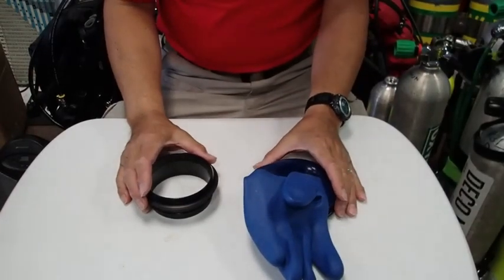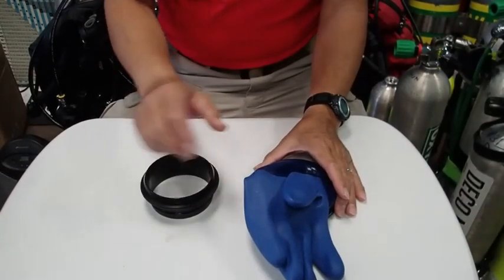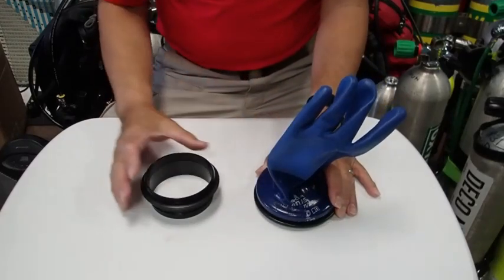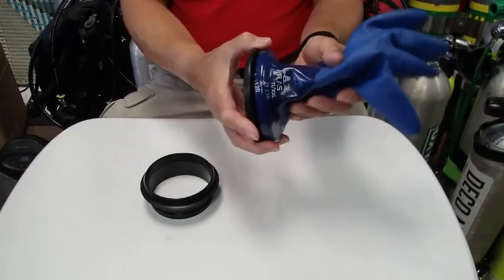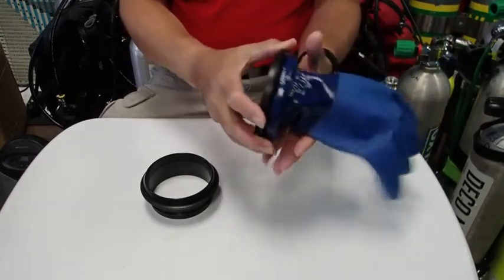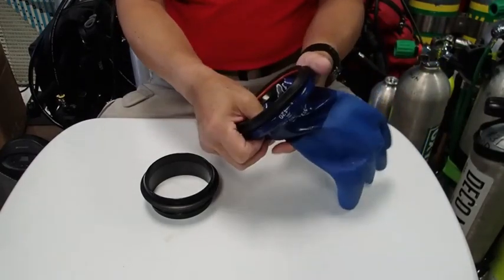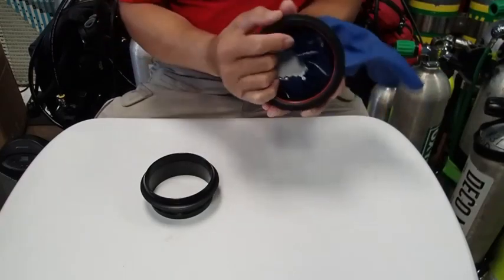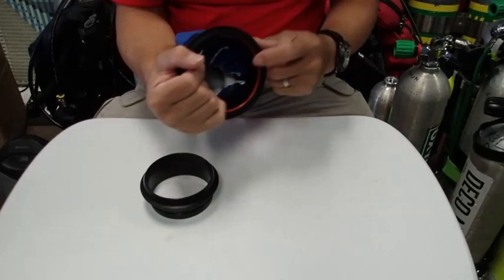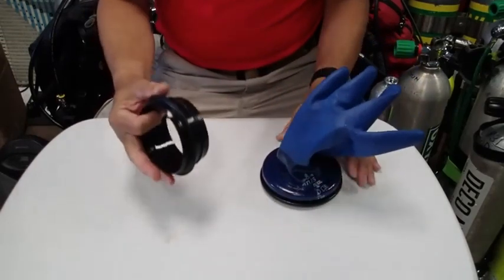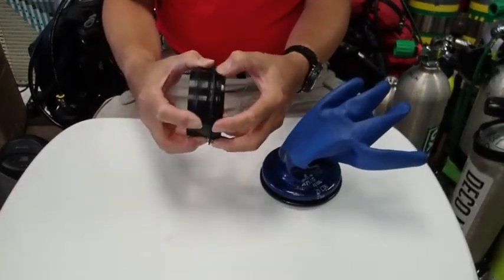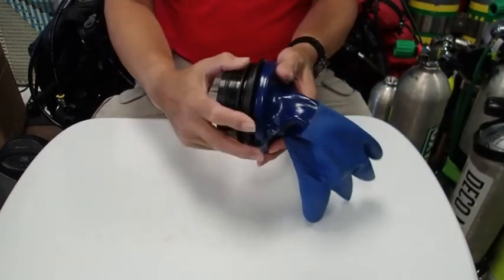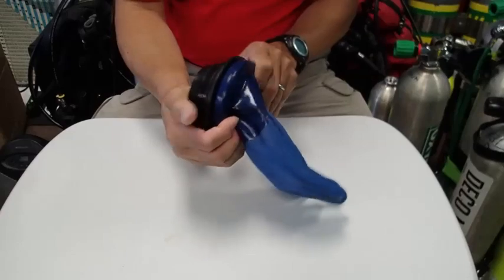The third system is the Waterproof Optima System. And this is actually very similar to another system called the Kubi System. And again, it consists of the dry glove component, and in this case there is an O-ring seal. You can see at the orange part here, there is an O-ring seal that snaps over this section of the cuff part. So in order to use this glove system, what you do is you squeeze them together like that.